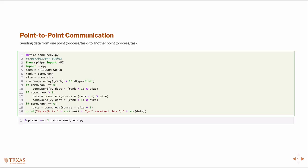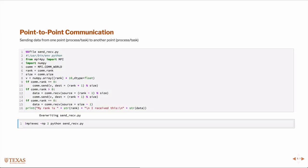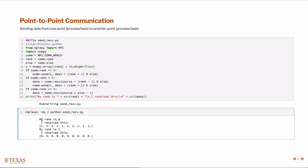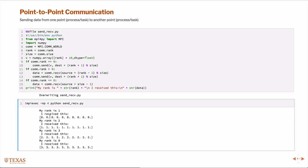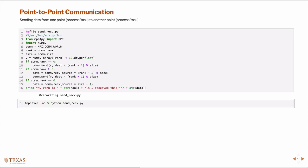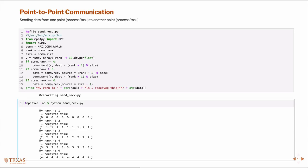If we execute this and create sendReceive.py, running it on two processors shows that rank zero received the ten ones and rank one received the ten zeros. On four processors, rank one received from zero, rank two received from one, rank three received from two, and rank zero received from three. That's a simple send and receive program — we're just doing explicit calls. Let's then look at collective communication.